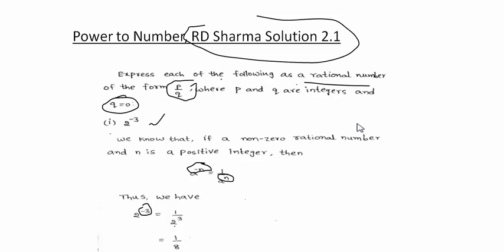Thus we can write 2 to the power minus 3 is 1 by 2 to the power 3. Now 2 to the power 3 is basically 2 multiply by 2 and again multiply 2, which is 8. Hence this equals 1 by 8.